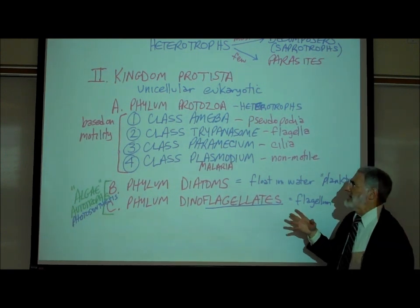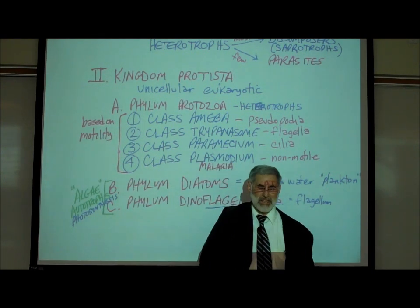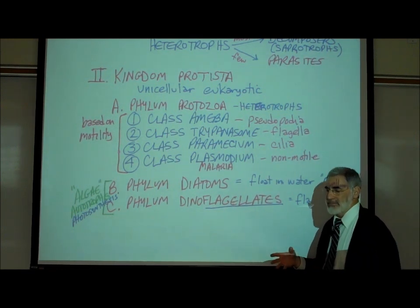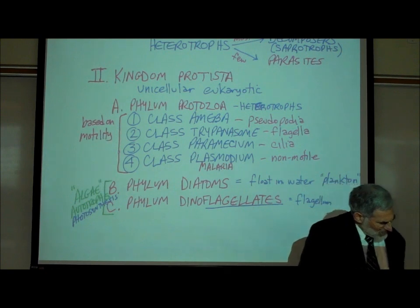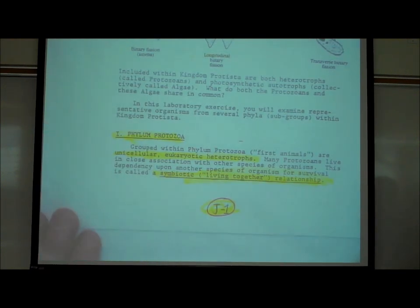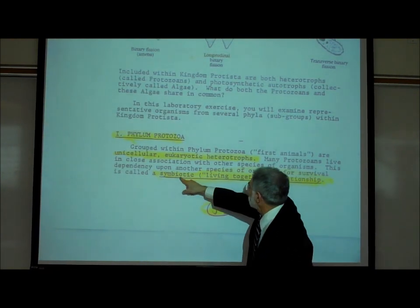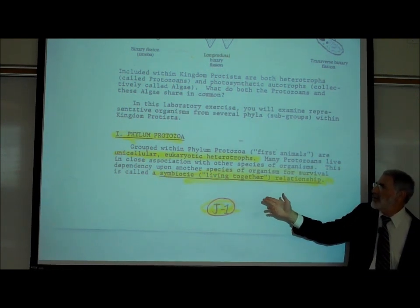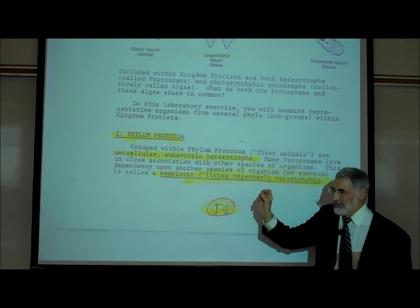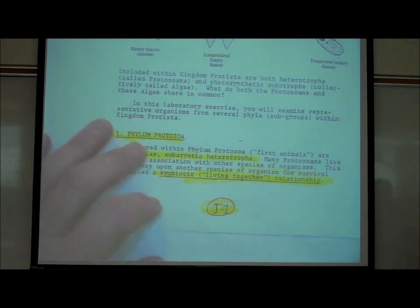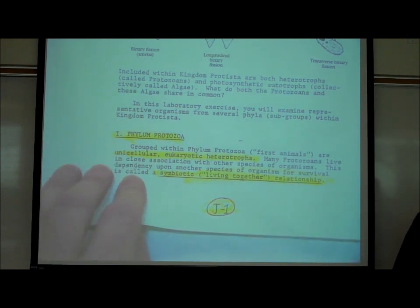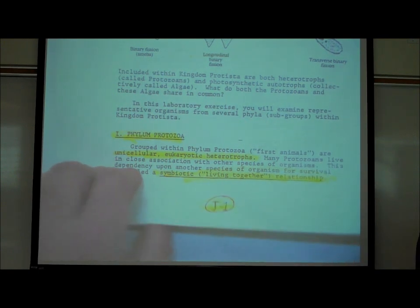Many of these single-celled organisms in Kingdom Protista have symbiotic relationships with other organisms. Symbiosis comes from two Greek roots: 'sym,' meaning together, and 'bio,' meaning life — living together. This is when two different species live together, and it may be a beneficial relationship or an adversarial or destructive one.